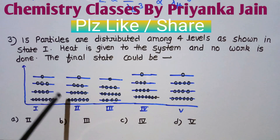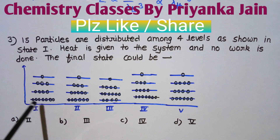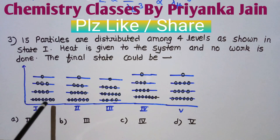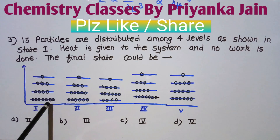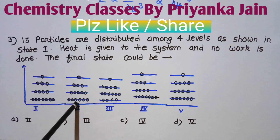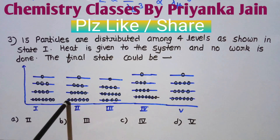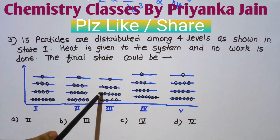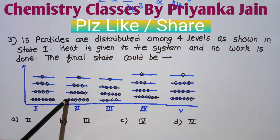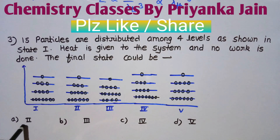The condition is that heat is given and no work is done, which is possible only when a particle is excited from the ground level to the first excited state. In the initial state there are 7 particles in the ground level and 4 in the next. In option 2, there are 6 particles in the ground level and 5 in the next — meaning one particle has been excited. The other options involve 2 particles being excited, which is not consistent. So option A (state 2) is the right answer.